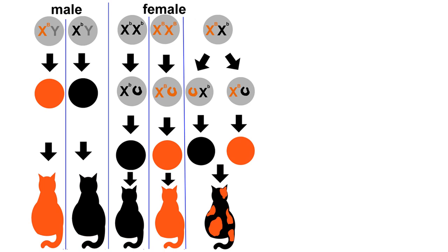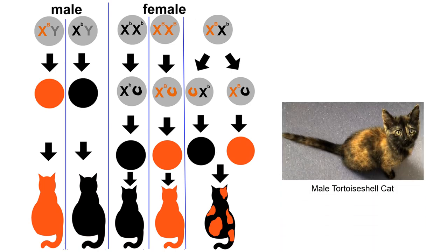However, it is possible to have a male tortoiseshell or calico, though quite rare. To get that, the male must be XXY — a form of aneuploidy, having an unusual number of chromosomes. Even though there are two X chromosomes, the Y chromosome is still present with its SRY gene, so the cat develops as male. Because there are two X chromosomes, dosage compensation still occurs just as in a female, producing the tortoiseshell pattern.